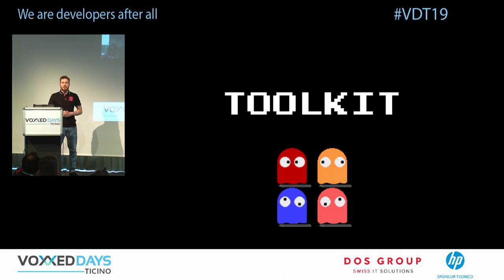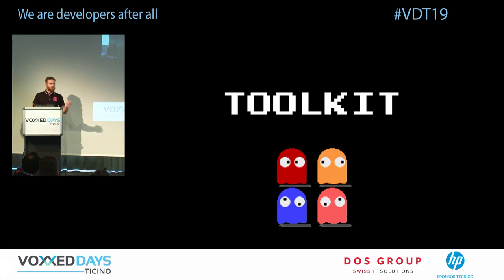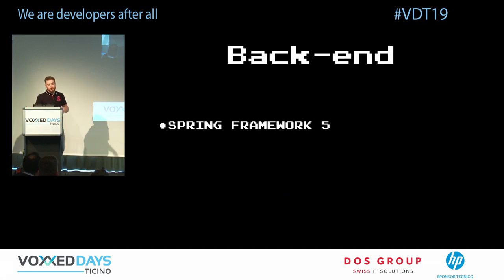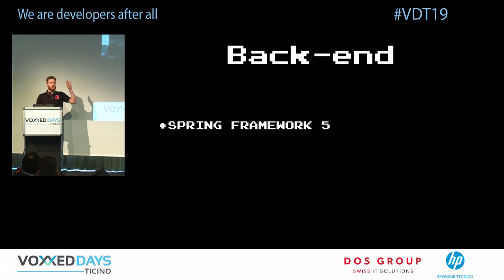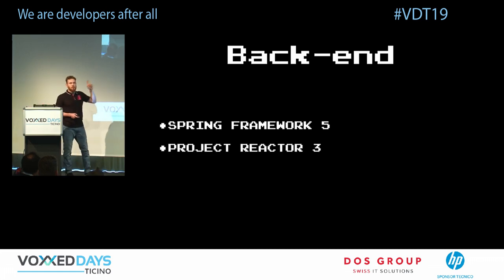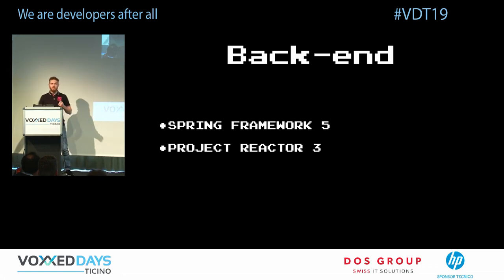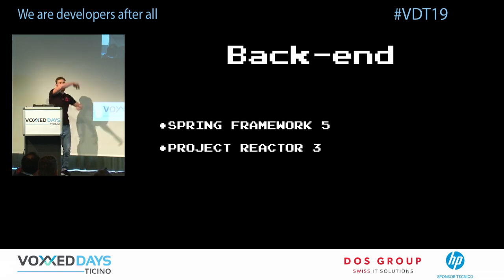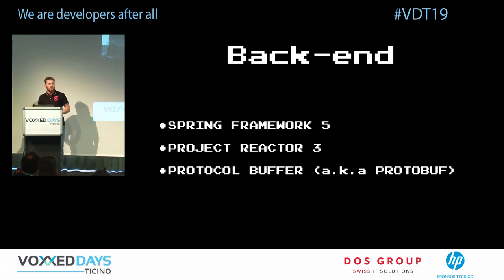I've already implemented everything — we won't focus on writing code. I used Spring Framework 5 for the server and microservices part. For high performance, clarity of functional code, and simplicity of building complex data transformations, I'm using Project Reactor — it fits really well for this use case of streaming from one component to another.